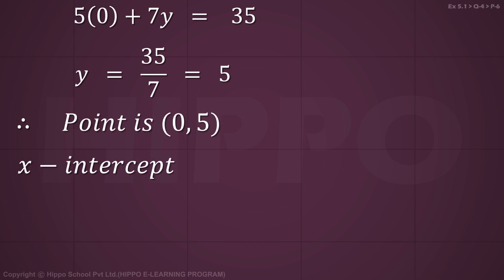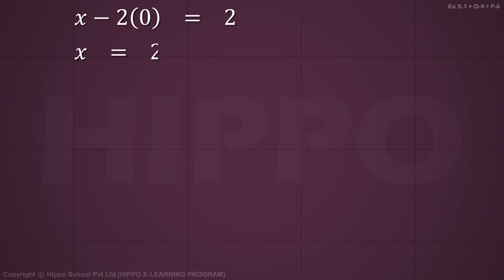Now we'll find the x-intercept and y-intercept for equation 2. Put y equals 0 in equation 2. Then x minus 0 equals 2, so x equals 2. The point is (2,0).